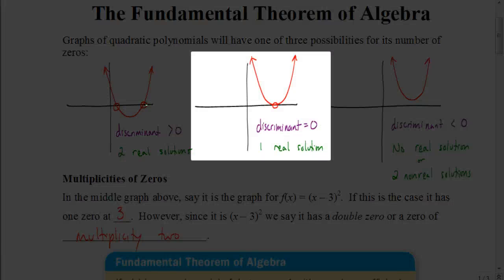There's another scenario that could happen, and that would be if there is exactly one x-intercept, meaning there's one real solution. In that case, if you were using the quadratic formula and you get the discriminant equaling exactly zero — meaning what's under the radical is exactly zero — then you know that there's one real solution.